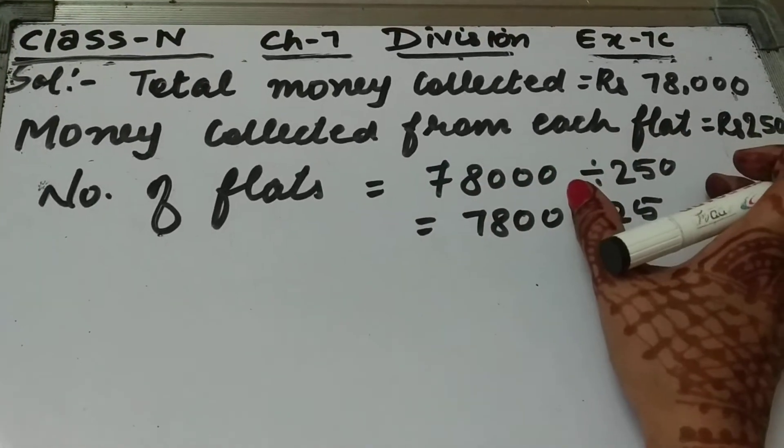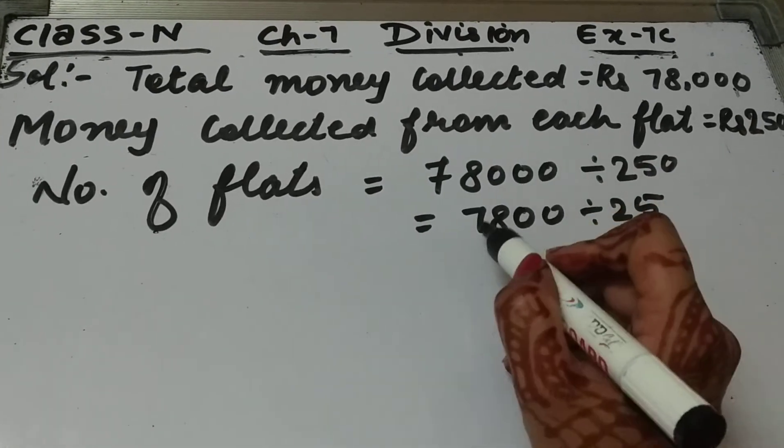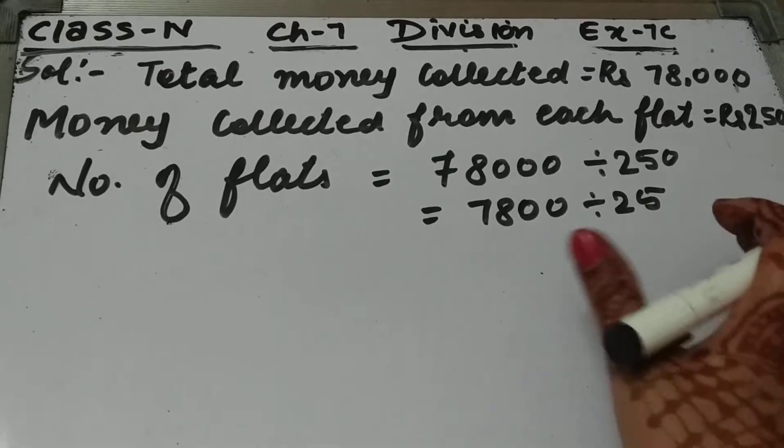So 78,000 divided by 250 and we will cancel equal number of zeros from both these numbers. So it will become 7,800 divided by 25. Now let's start the division.